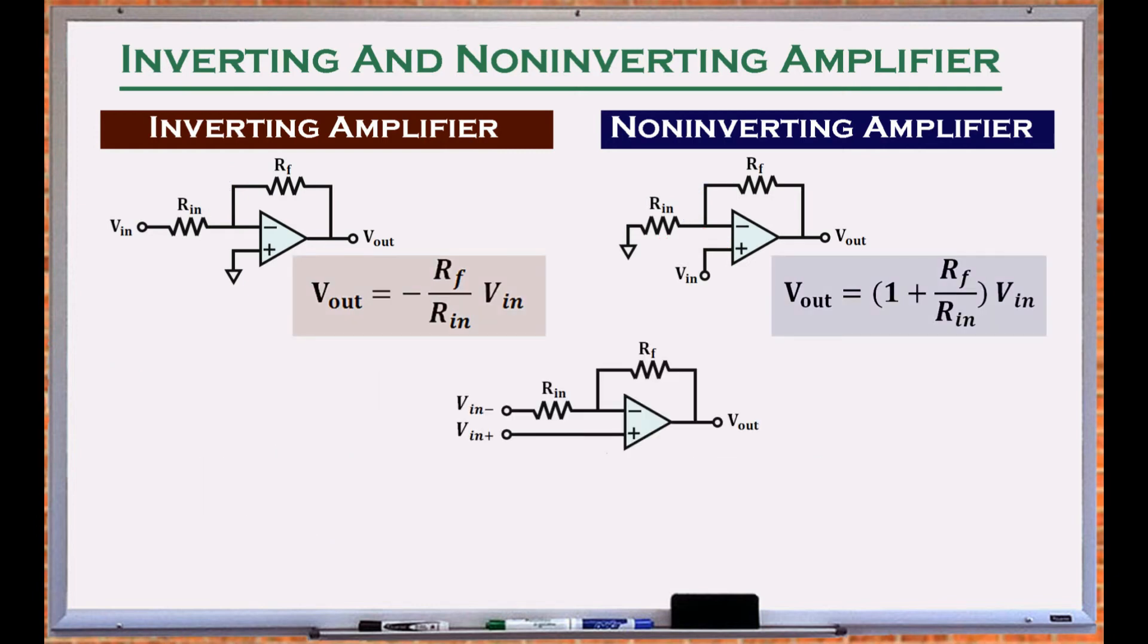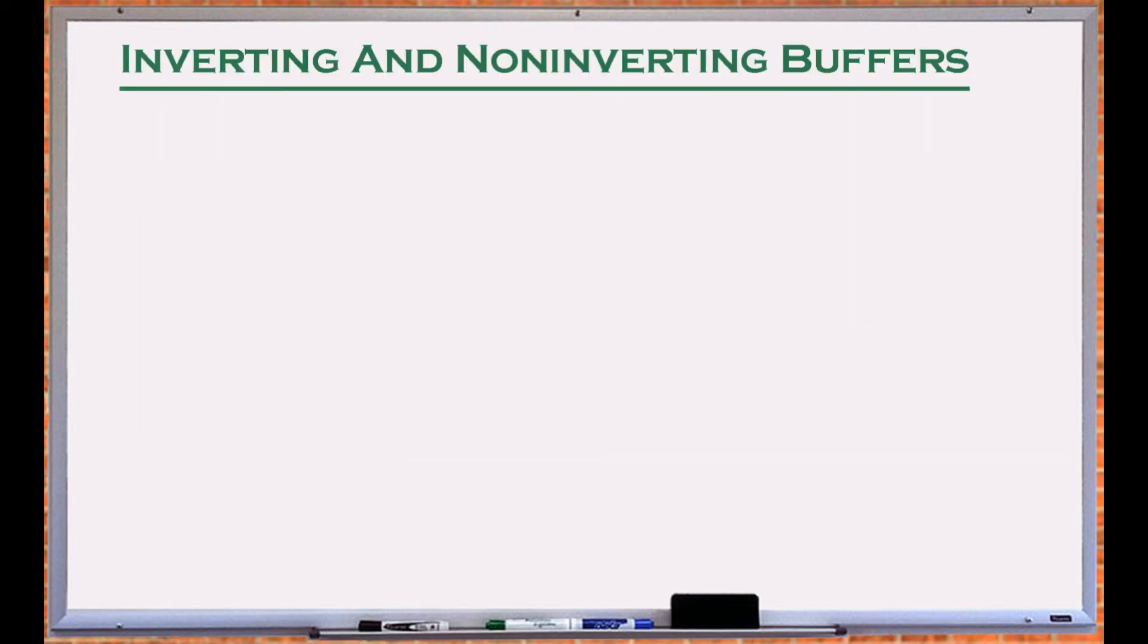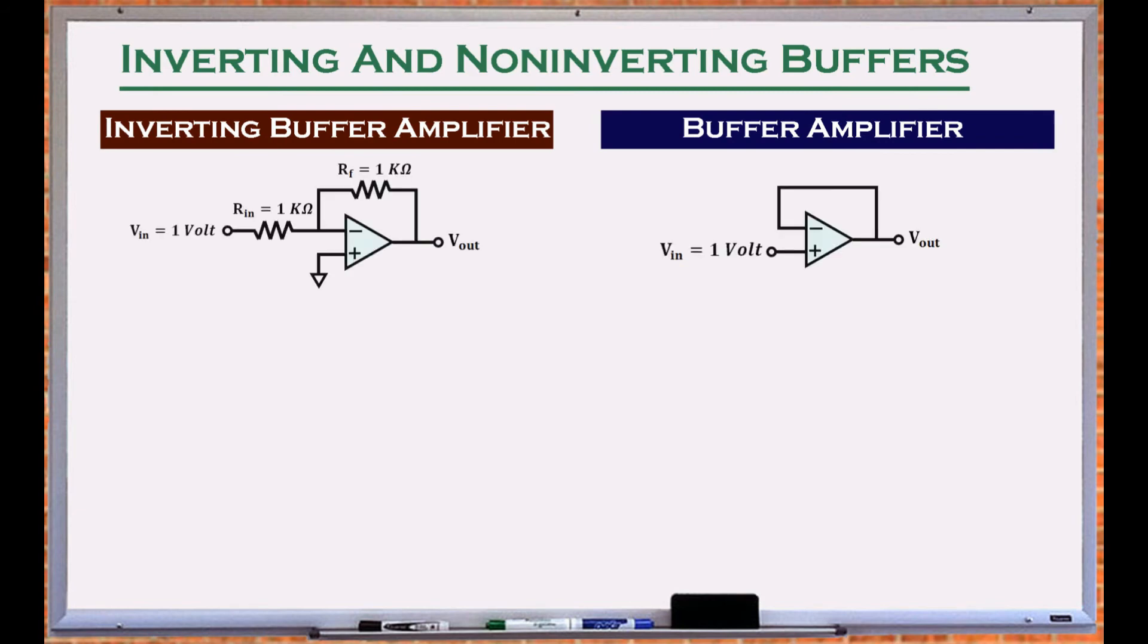These equations provide the relationship between the output and the input of an amplifier. Consider the inverting and non-inverting buffers, used to isolate the output load from the input. By placing the resistor values in the corresponding equations, we can find the output voltages.